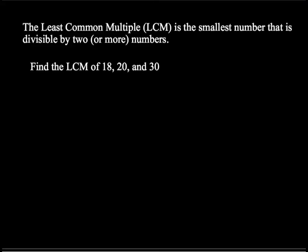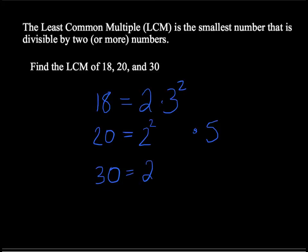We're going to write down the prime factorization for each of these. 18 is 2 times 3 squared. 20 is 2 squared times 5. I'm going to write the 5 kind of on its own over there. And 30, well, that's 2 times 3 times 5. I'm going to take a moment to note that all of these individual factors are to the power of 1.